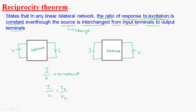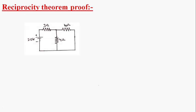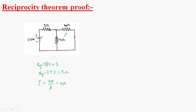I will explain the Reciprocity Theorem by a simple network. In this network, these two resistors are in parallel with each other — 4 ohms is in parallel with 4 ohms, and this combination is in series with 3 ohms. The parallel combination results in 2 ohms, which gives a total R equivalent of 5 ohms. The total current flowing through the circuit I is equal to V by R, that is 20 by 5, which is equal to 4 amperes.